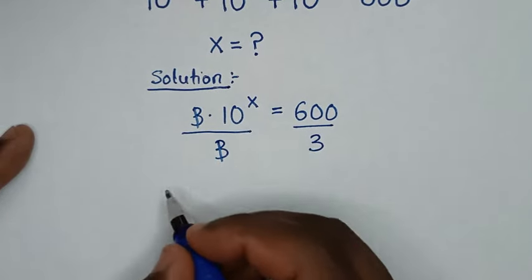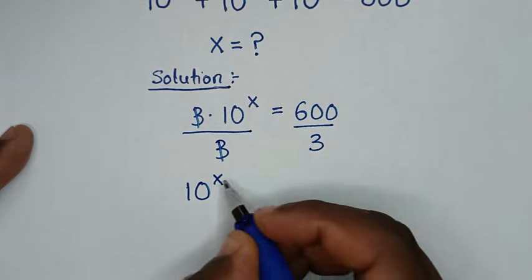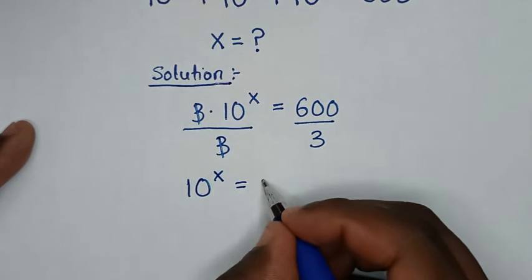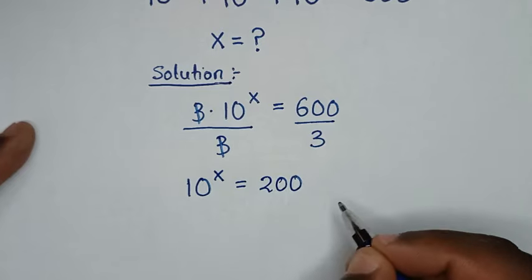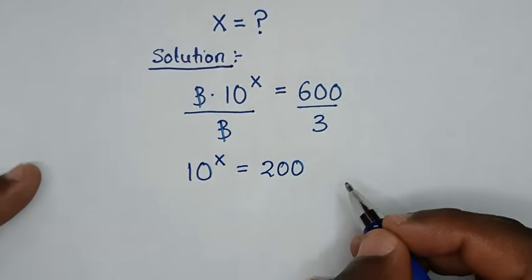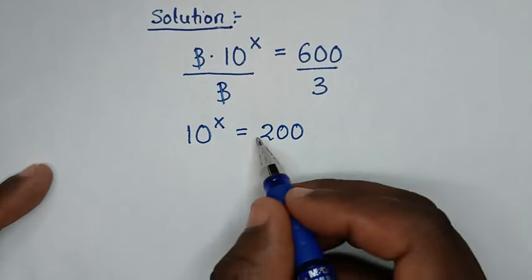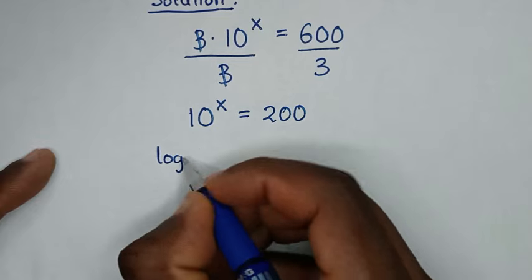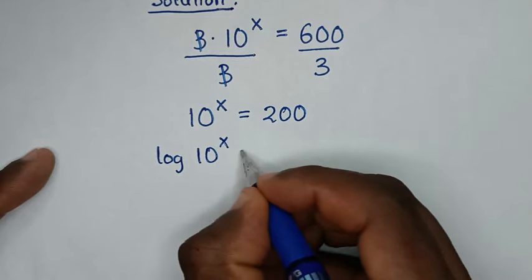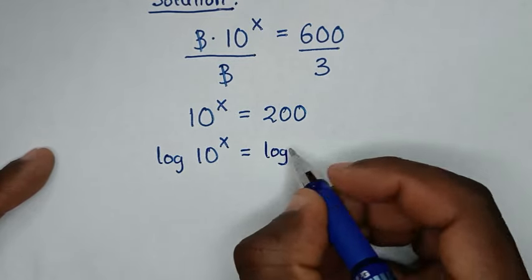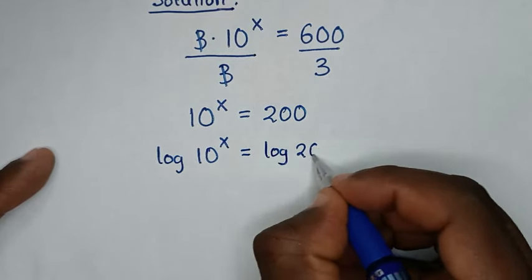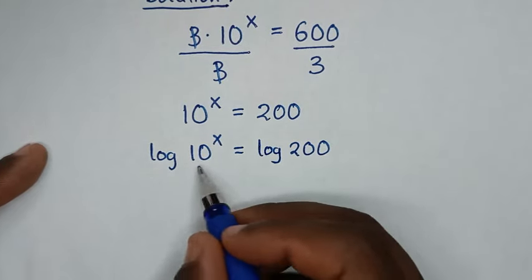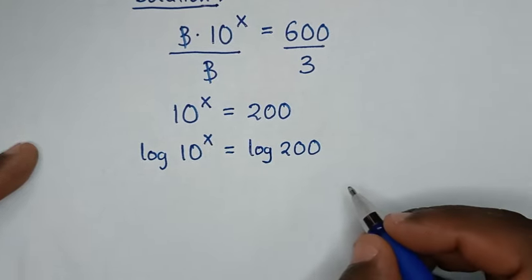This 3 and this 3 will cancel, so it will be 10 power x is equal to 600 divided by 3, which is 200. In the next step we'll apply log on both sides, so it will be log of 10 power x is equal to log of 200.